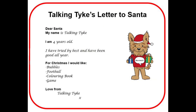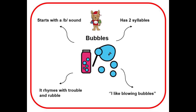Here is an example of how to do this. Look at Talking Tyke's Christmas list. On his list are bubbles, football, colouring book and a game. Let's think about the first thing on Talking Tyke's list: bubbles. Bubbles starts with a B. It has two syllables. It rhymes with trouble and rubble. "I like blowing bubbles" is a sentence we could say about bubbles.